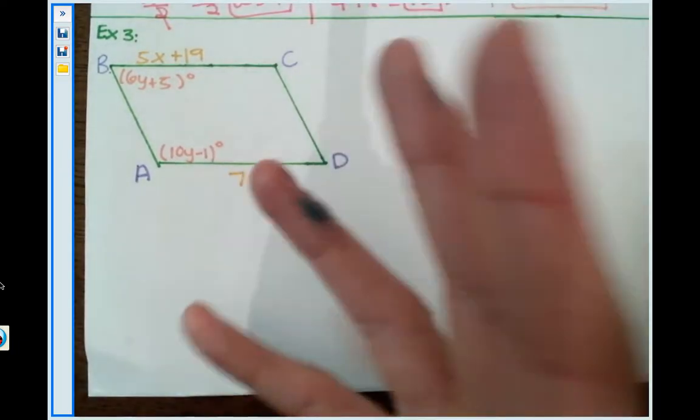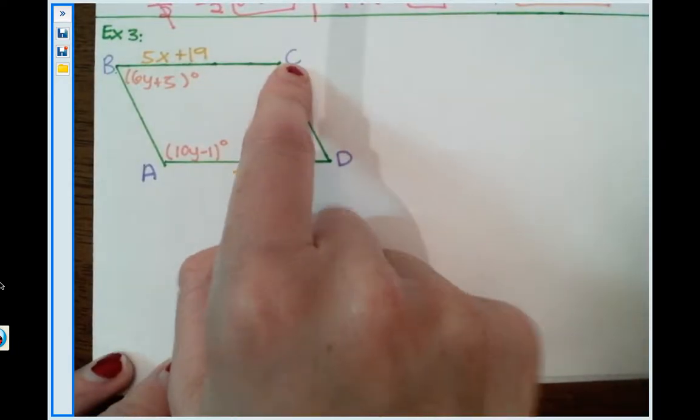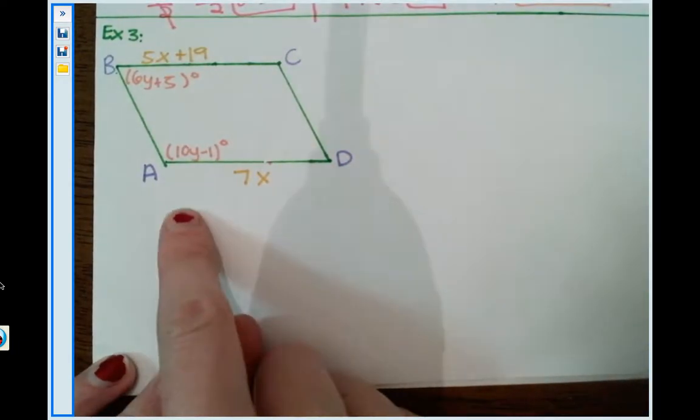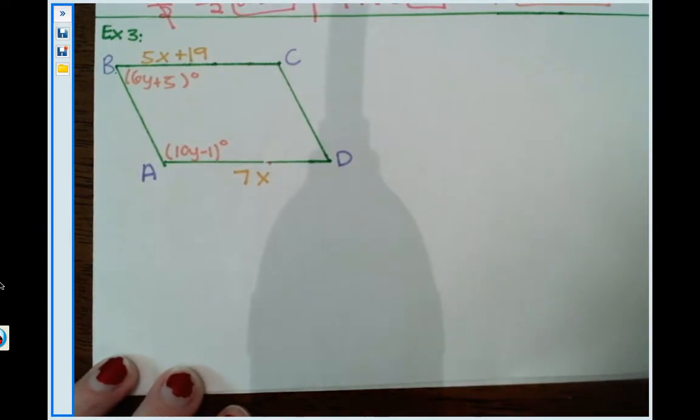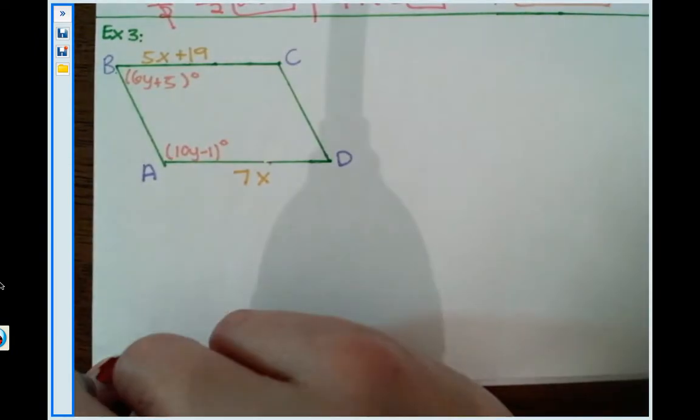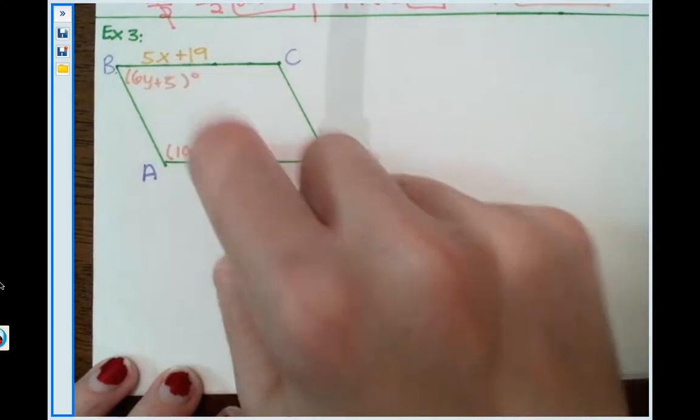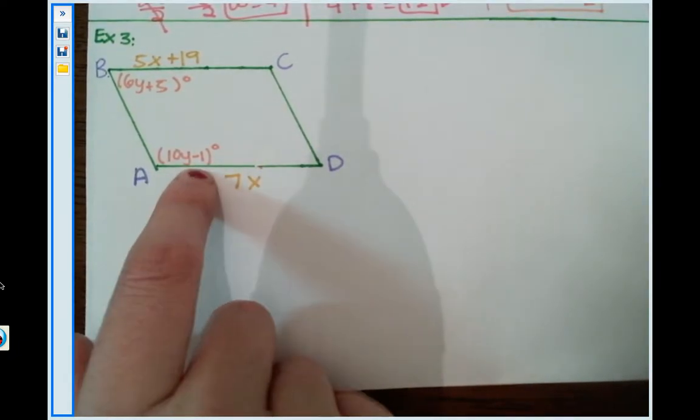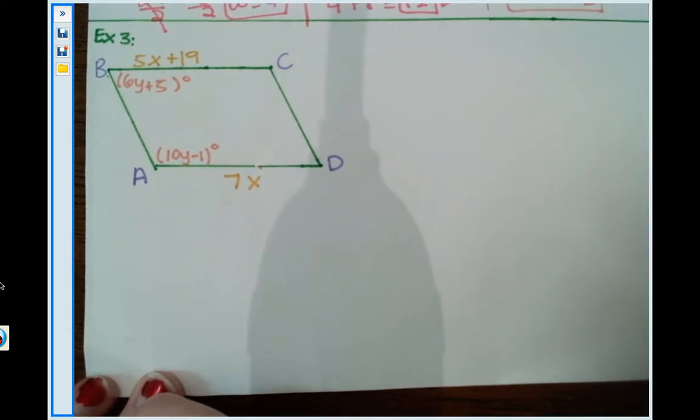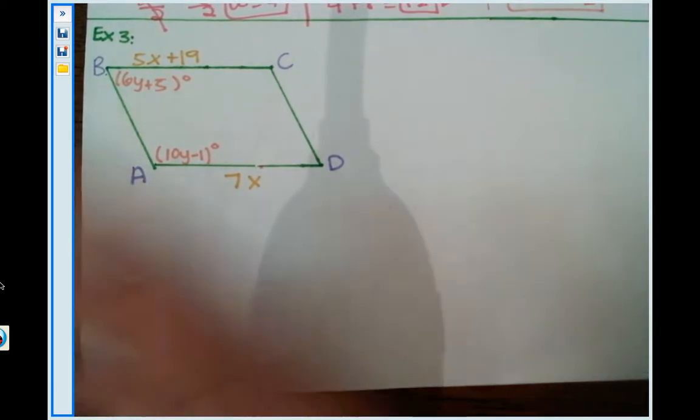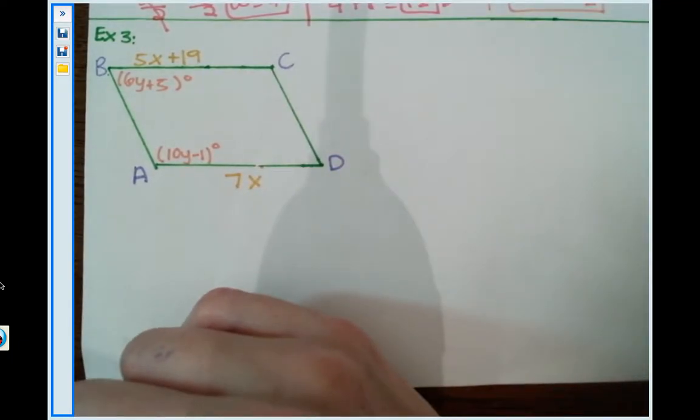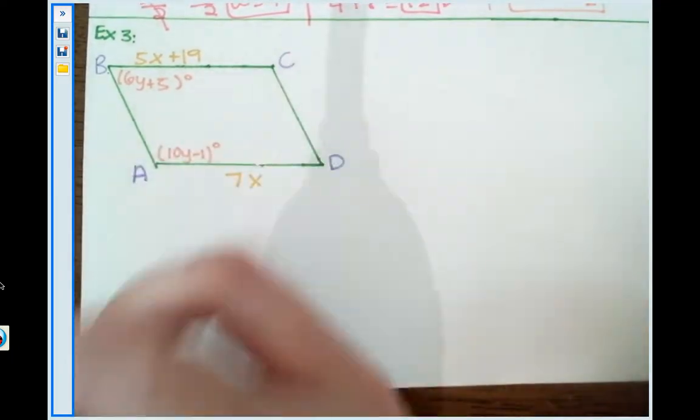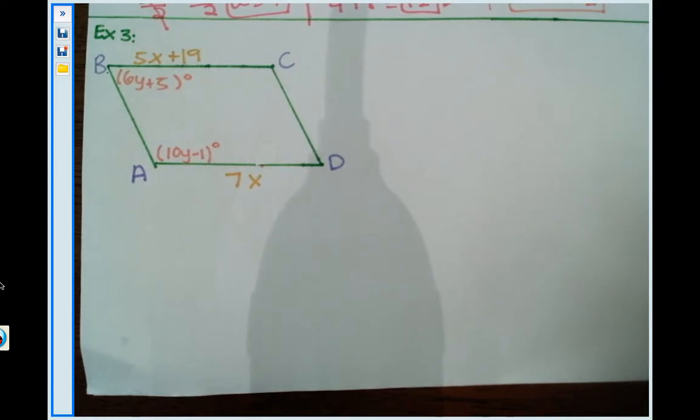So we have several things going on. We know that BC is 5x plus 19 and AD is 7x. So we know two side lengths of a parallelogram and we also have two angle measures. We know angle B is 6y plus 5 and angle A is 10y minus 1. So we need to think about properties of side lengths and parallelograms as well as properties of angles and parallelograms.